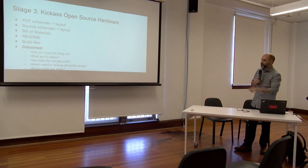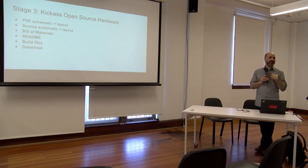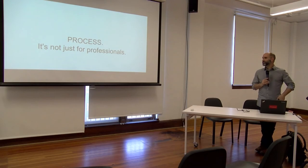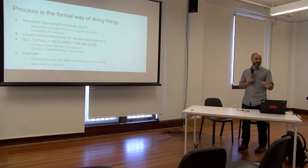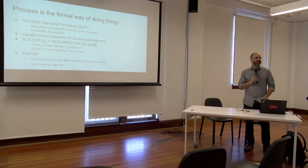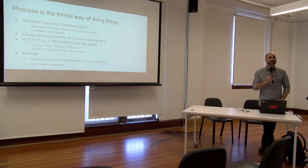Those are the files you should have in your open source projects on GitHub. Now: process. This is the formal way of doing things. You've all done SOPs — they're all awful, we all hate them. In development, you don't use SOPs — you're too busy. However, when you're going to do a release that's going to affect literally thousands of people, don't get it wrong. Use some kind of checklist.